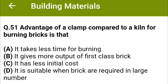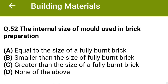Advantage of a clamp compared to a kiln for burning bricks is that: option A it takes less time for burning, option B it gives more output of first class brick, option C it has less initial cost, option D it is suitable when bricks are required in large numbers. The correct answer is option C: it has less initial cost. The internal size of mold used in brick preparation is: option A equal to the size of a fully burnt brick, option B smaller than the size of a fully burnt brick, option C greater than the size of a fully burnt brick, option D none of the above. The correct answer is option C: greater than the size of a fully burnt brick.